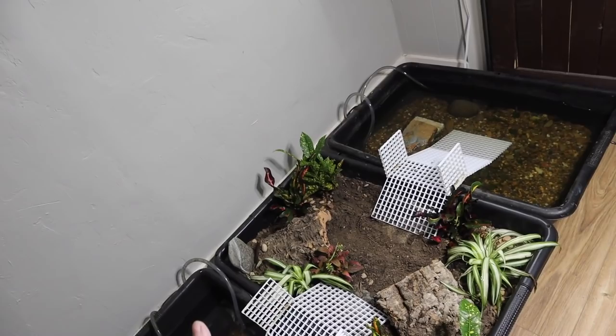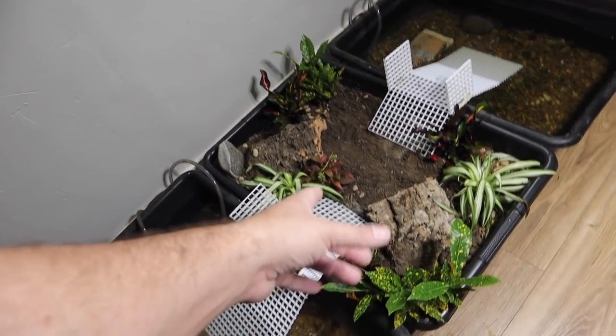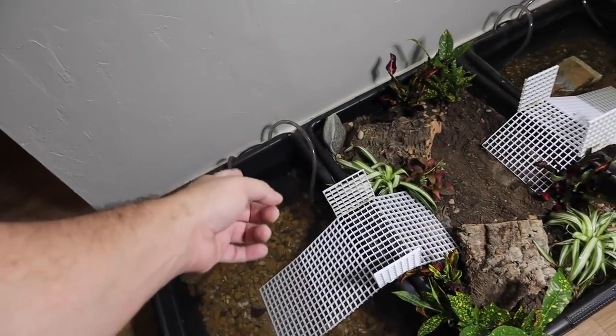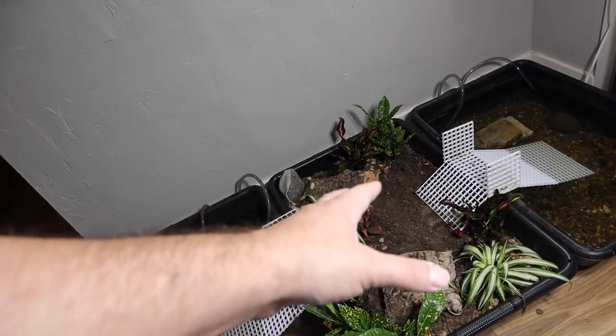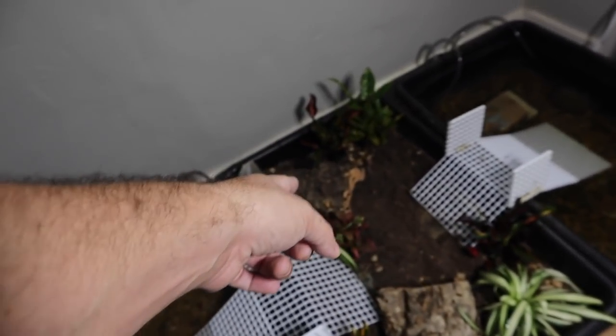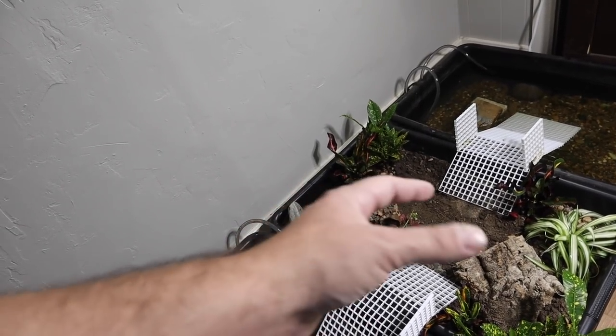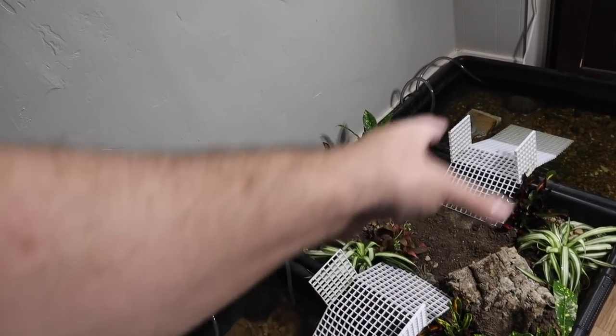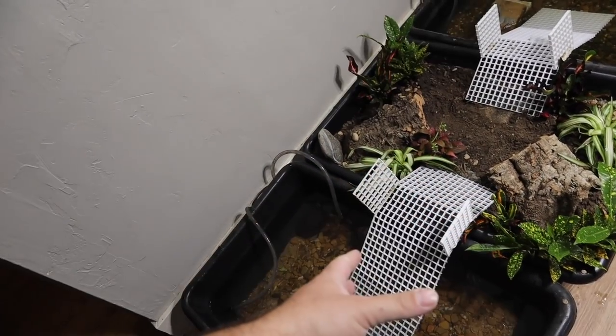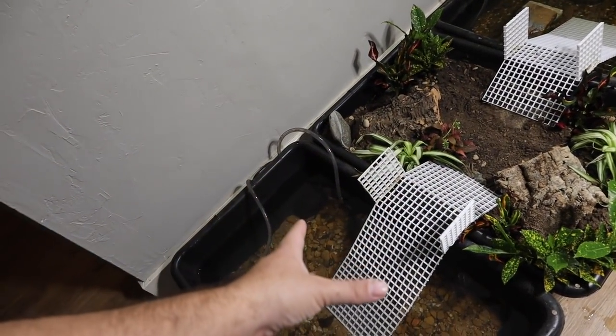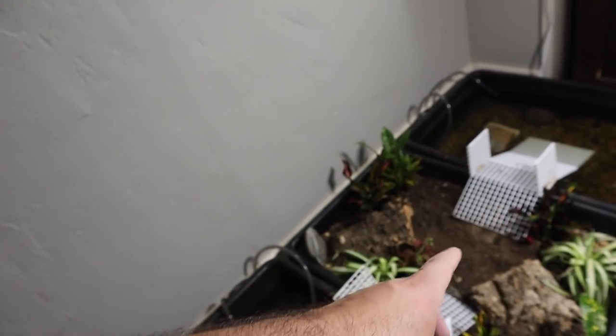We got the bridges set up where they have access to their terrestrial area now. Actually it's funny because Turtle Stew has already actually been up in here. In fact, Turtle Stew being the African side neck had come up in here and completely buried himself in the dirt up underneath this cork hide right here. So that is fantastic. Turtle Soup I have put up here and he has made his way back into the water, which is fantastic.